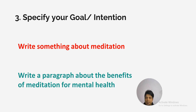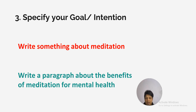The third technique is to specify your goal or intention very clearly. For example, if you just write 'write something about meditation', ChatGPT has to assume a lot of things. Instead, write 'write a paragraph about the benefits of meditation for mental health.' Now ChatGPT understands exactly what the intention is behind writing this content.